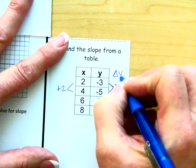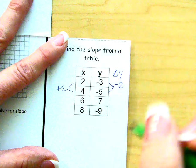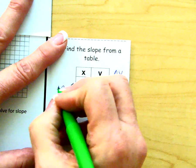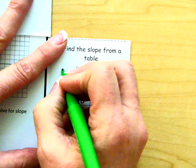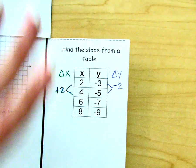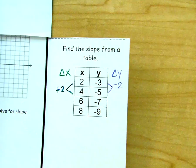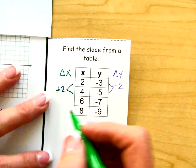This is my y change. This is my x change. So we have a change in y over a change in x.